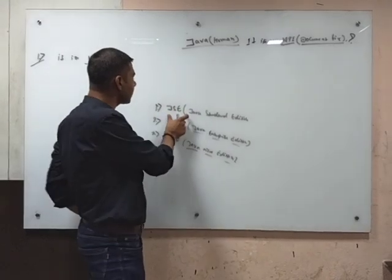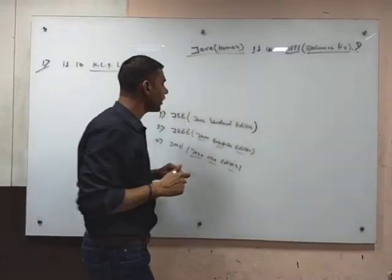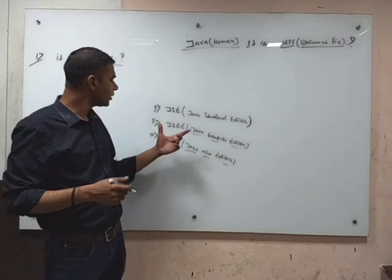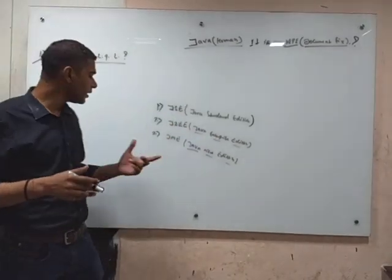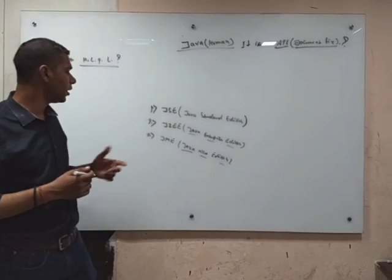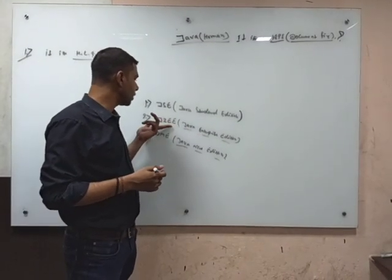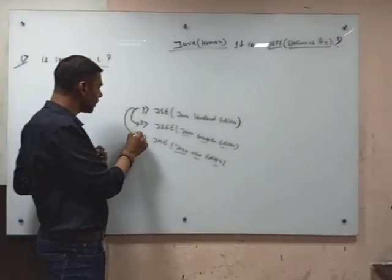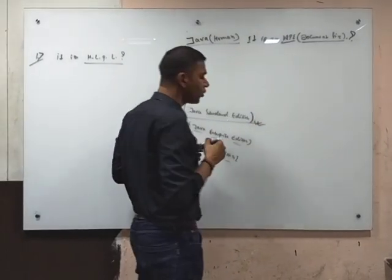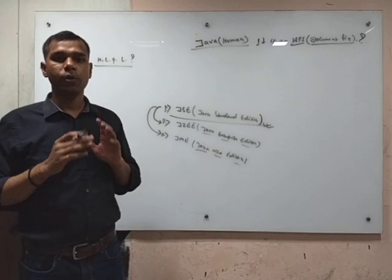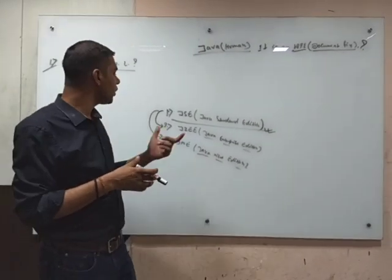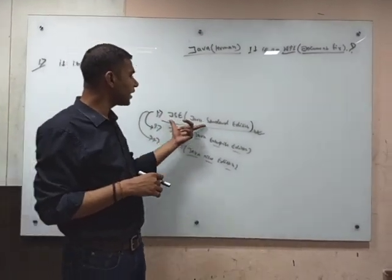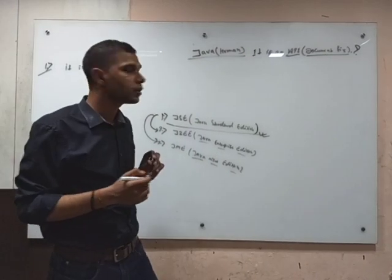In Java Standard Edition we will discuss the core part. In Java Enterprise Edition we will discuss web-based applications. Java Micro Edition covers mobile-level applications. Whenever you work with J2EE, the core JSE concepts are also used there. For any product-based or service-based application, you must have knowledge of the JSE part — people call it Core Java.